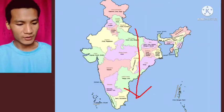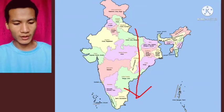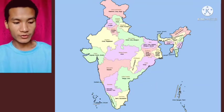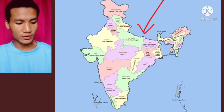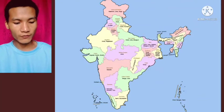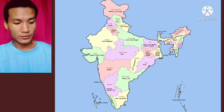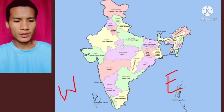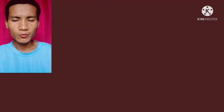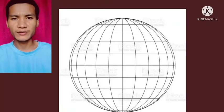India extends from the snow-covered Himalayas in the north to the tropical rainforests to the south. India stands apart from the rest of Asia, bounded by the Great Himalayas to the north, stretching southwards into the Indian Ocean between the Bay of Bengal on the east and the Arabian Sea on the west.